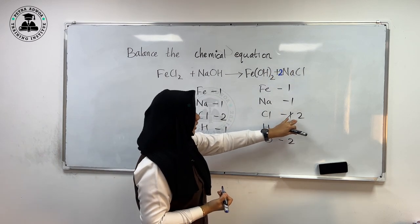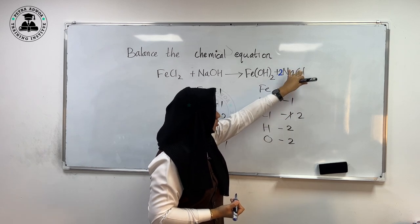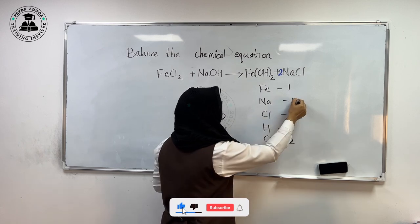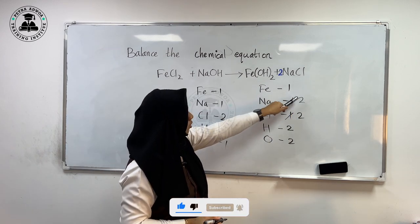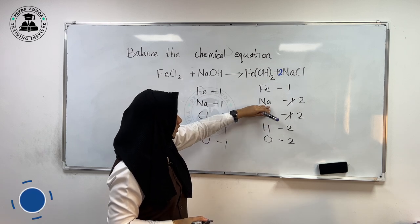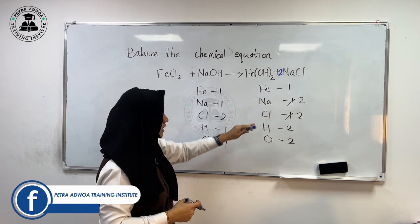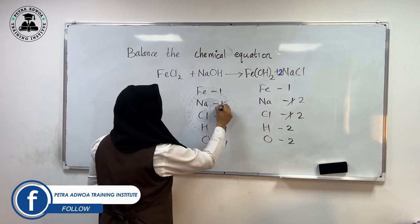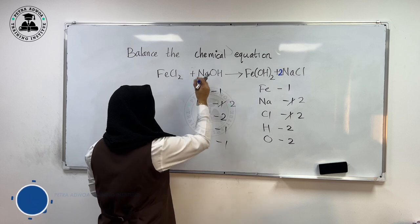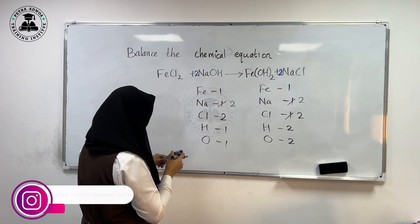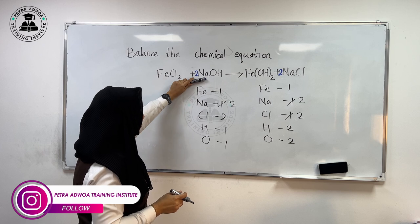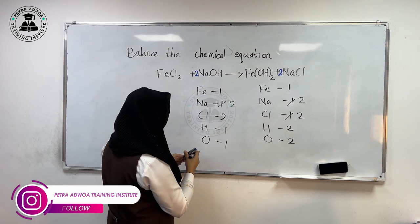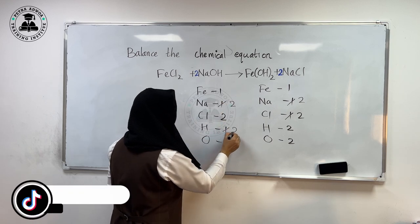When you give 2 as a coefficient, chlorine becomes 2, but sodium also becomes 2 on that side. So we have to go back and update the elements list — sodium is now 2. On the left hand side, sodium must also be 2, so we give 2 NaOH there. That means in 2 NaOH, sodium is 2, oxygen is 2, and hydrogen is also 2.